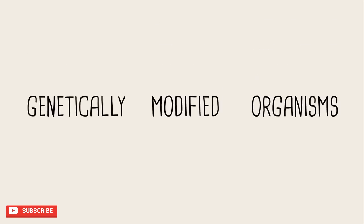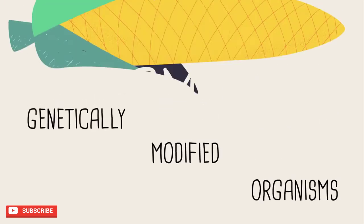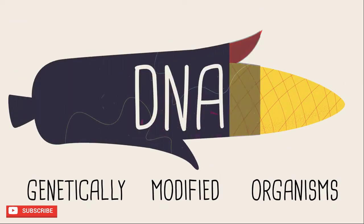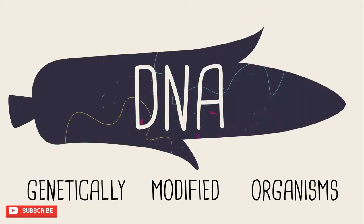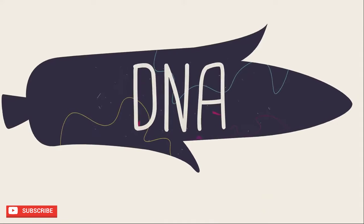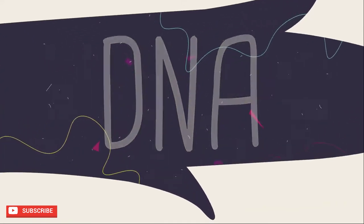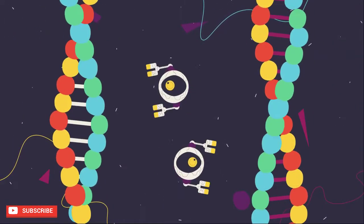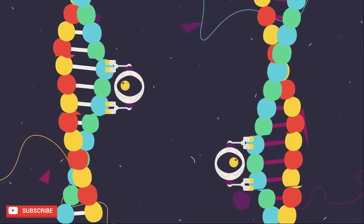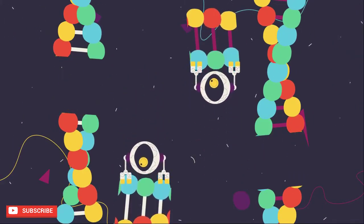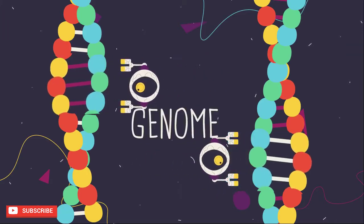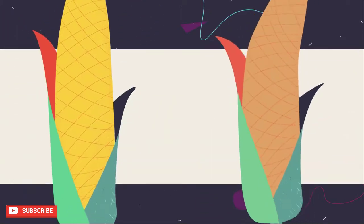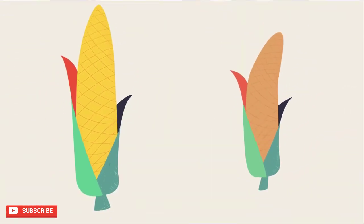Genetically modified organisms, or GMOs, have had their DNA artificially modified by humans using modern genetic manipulation techniques. By changing the DNA — so changing the genome of an organism — means we can change its characteristics.